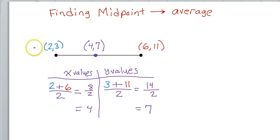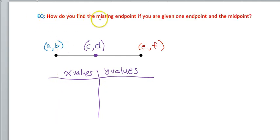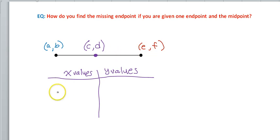If you have the coordinates of the endpoints given, that's how you find the midpoint. Now our goal is: what if I give you one endpoint and the midpoint — how do you find the other endpoint? A way of understanding this is by starting with just variables. Just like before, when we found the midpoint by averaging the two endpoints, let's set up two equations — an x value equation and a y value equation.